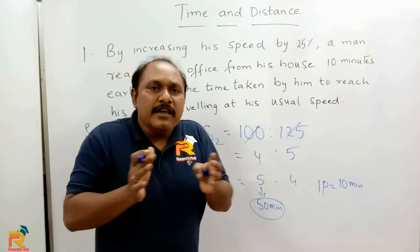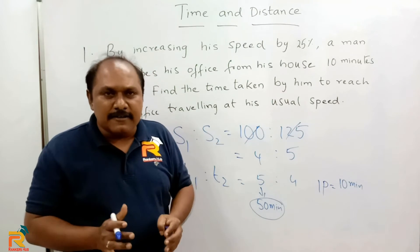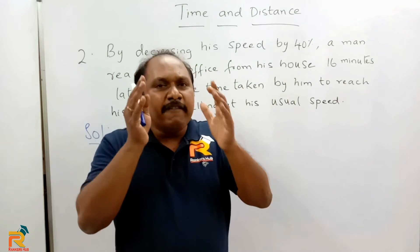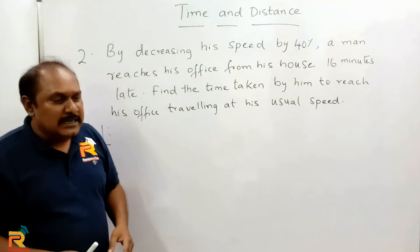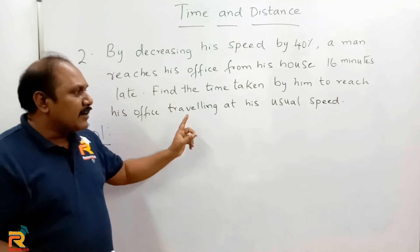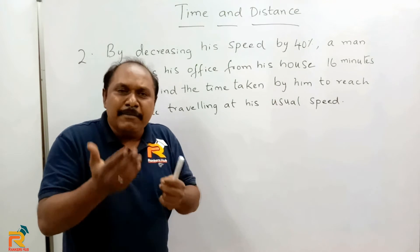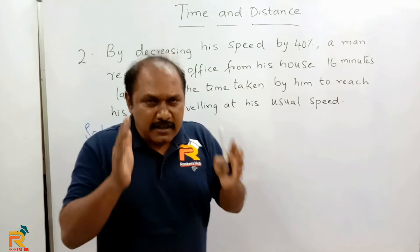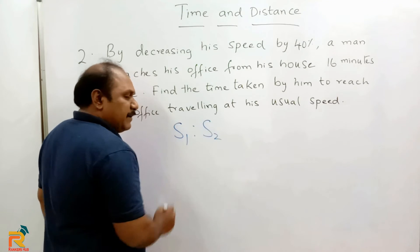You can see the difference: before we wrote equations; here we only used numbers and simple calculation. Now try this practice question in under 10 seconds: by decreasing his speed by 40%, a man reaches his office 16 minutes late. Find the time taken at his usual speed. Note that 16 minutes late or early just means a difference in time. Let his usual speed be s1 and new speed be s2.